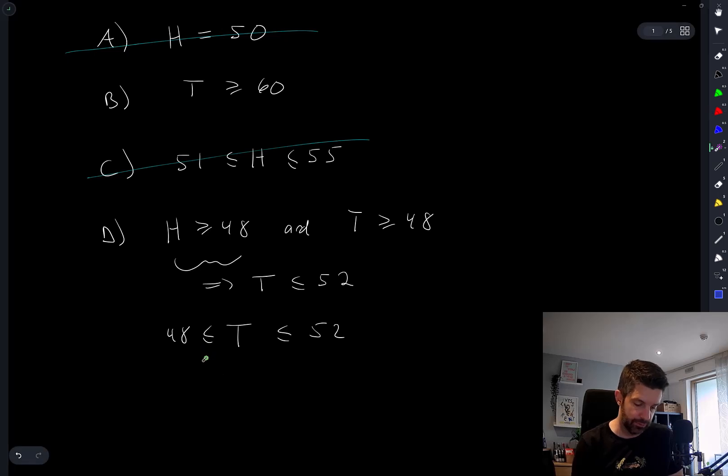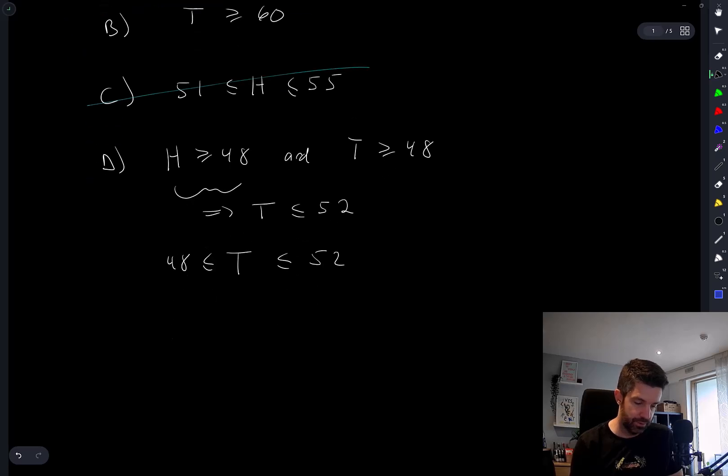Now that is more likely than that, so I can cross off now option C. The reason I know it's more likely is the range of values here is the same as the range of values here, but these ones are closer to the peak of the distribution.